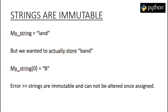Strings are immutable in nature. That means once they are assigned to a variable, the individual elements of the string cannot be manipulated or changed. For example, if we have a string stored in a variable myString and we realize the correct string should be 'band' instead of 'land', we cannot change just the first character. If we try to change the first character from L to B, Python will give us an error that strings are immutable and cannot be changed once assigned.